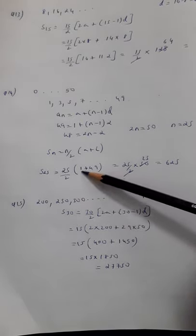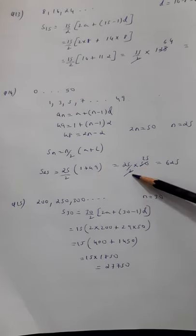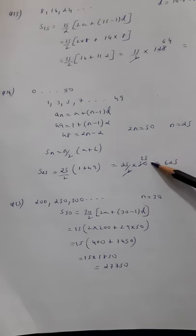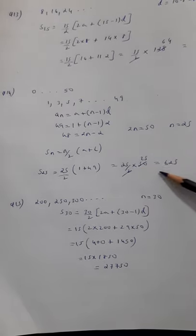So I am putting that value here. The first odd number is 1, last odd number is 49. So I am putting it here, I am solving this. I will get the value as 625.